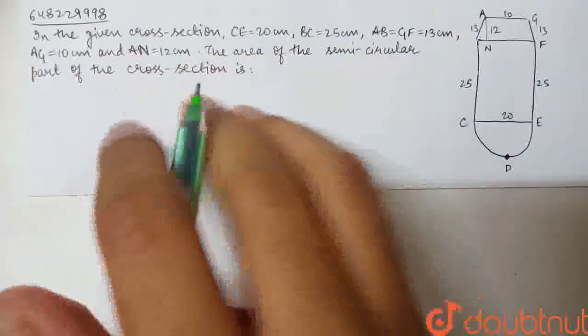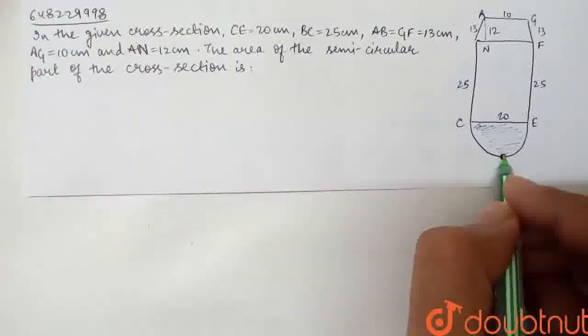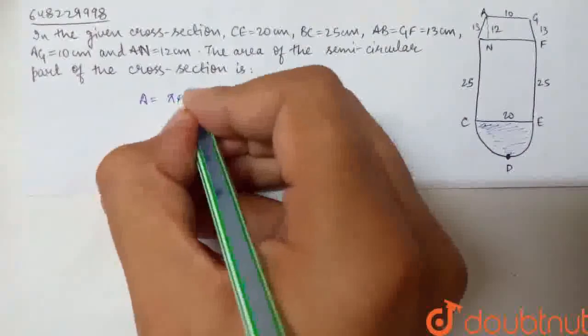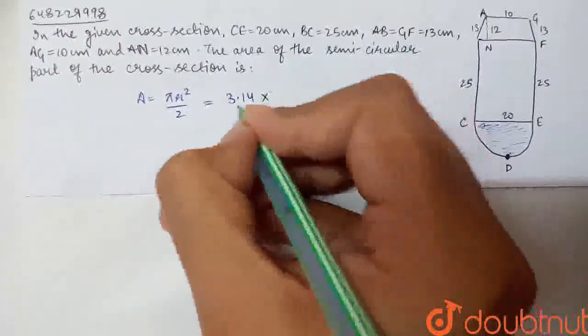Then, the area of the semicircular part of the cross section is to be found out. The area of the semicircular part is πr²/2. This is 3.14 × r²/2.